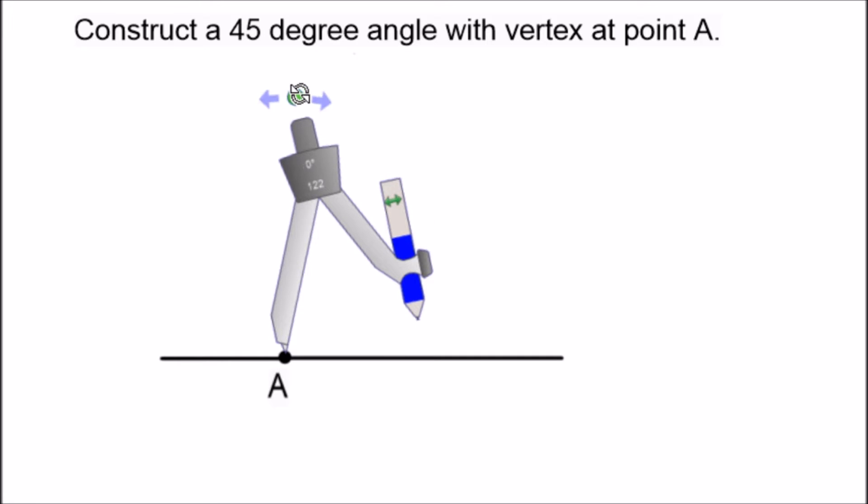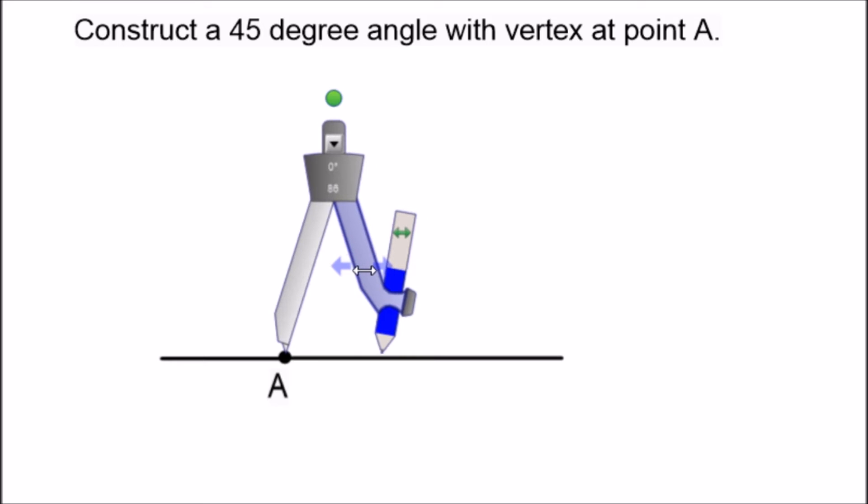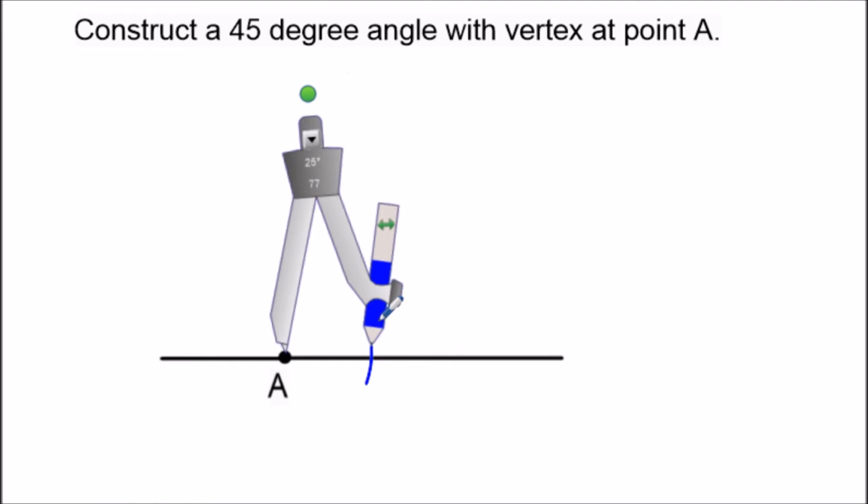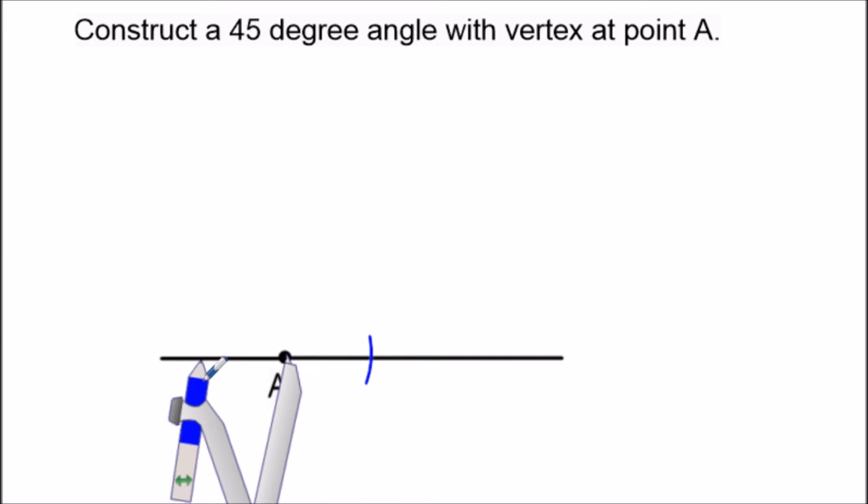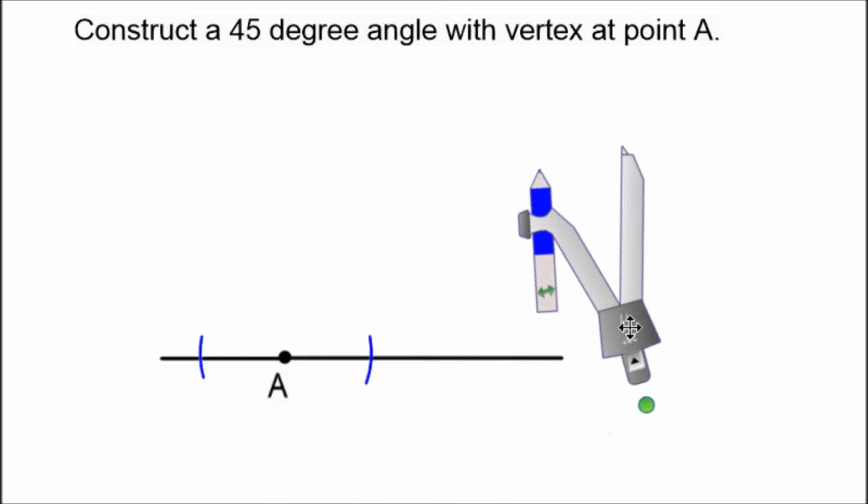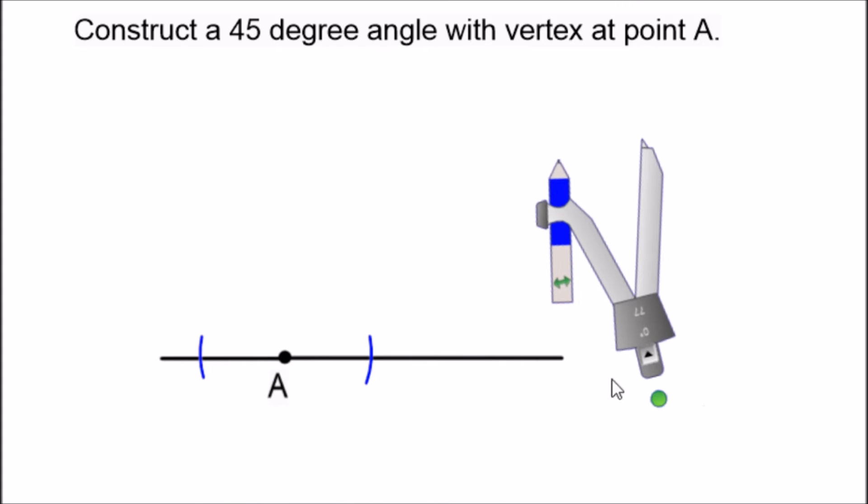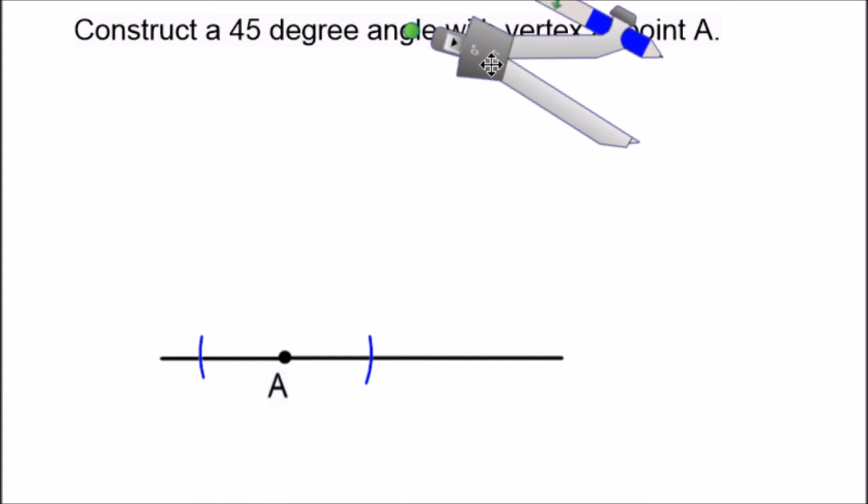To construct our perpendicular line we set the compass on point A and we swing an arc to the right and left of point A so that it hits our original line segment twice. Now the reason why we extended the line is so that it could hit on the left side too, just in case your point A is at the beginning of your line segment.